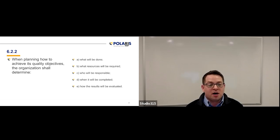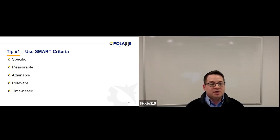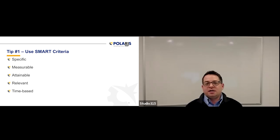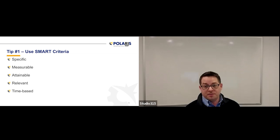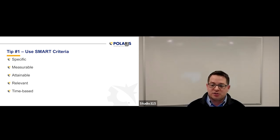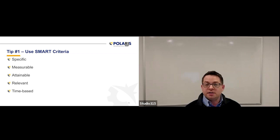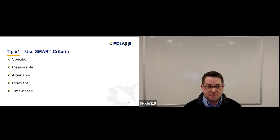Now we know what ISO requires of us, let's talk about some tips to help with your quality objectives. Tip number one: use SMART criteria. Those of you who are familiar with SMART criteria — they should be specific, measurable, attainable, relevant, and time-based. Auditors will use this as a litmus test to see if your objectives will hold up to meeting the needs of the standard. Looking back at section 6.2.1, many of those requirements listed line up with SMART criteria. Always apply this as a litmus test.